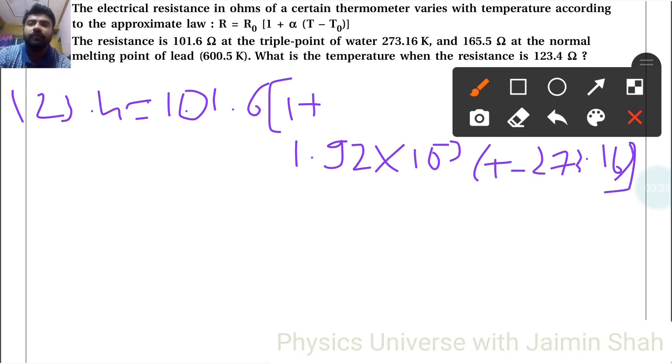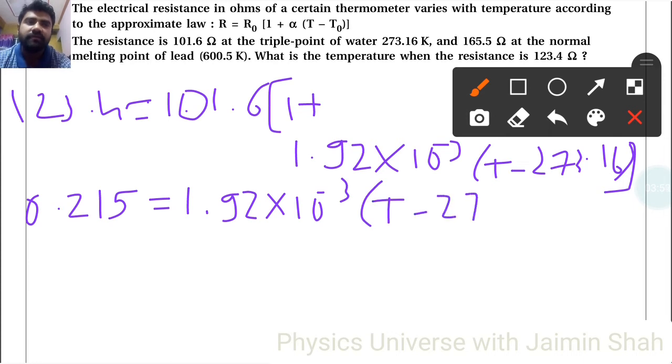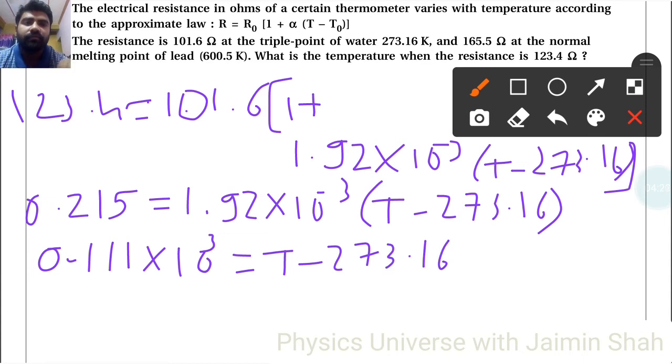123.4 ÷ 101.6 = 1.214. Subtracting 1: 0.215 = 1.92 × 10⁻³(T - 273.16). Dividing by 1.92 × 10⁻³: 0.111 × 10³ = T - 273.16.